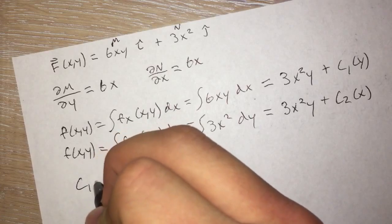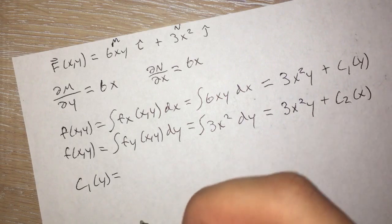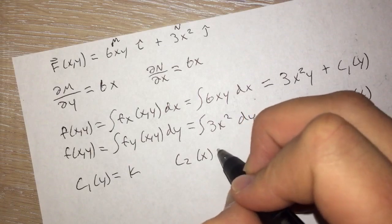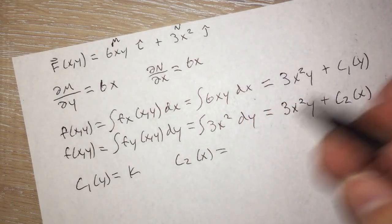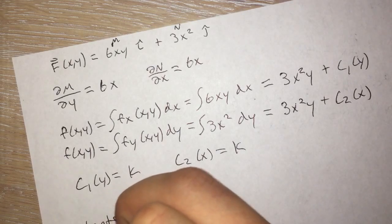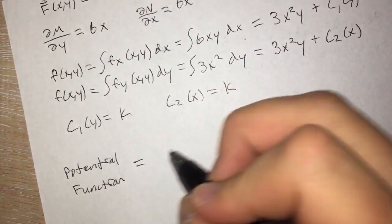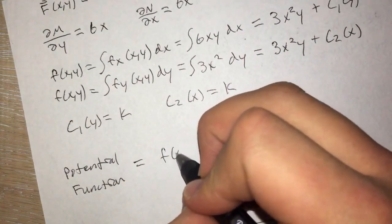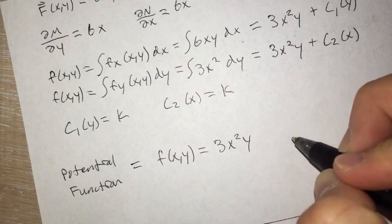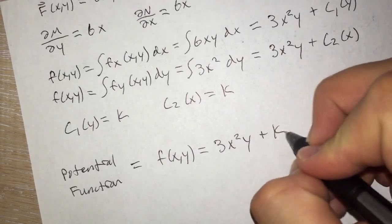So for c₁ of y, the only difference between these, which there really isn't one, will be your k. And for c₂ of x you will do the same thing and this will also be k. So when you go to write your potential function, this is going to be equal to f(x,y) which is equal to your 3x²y, your like term, and then your c₁ c₂ which is just k.